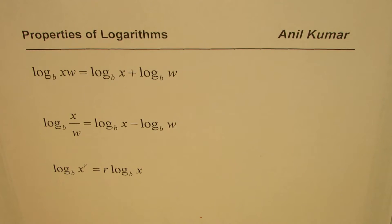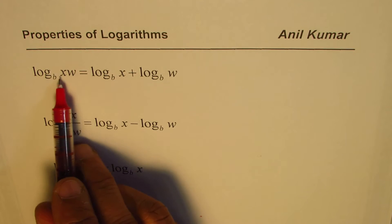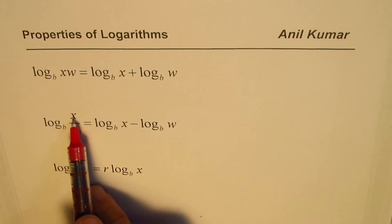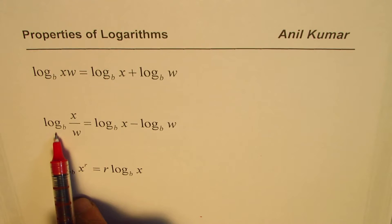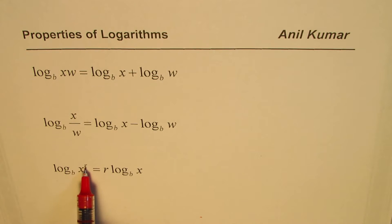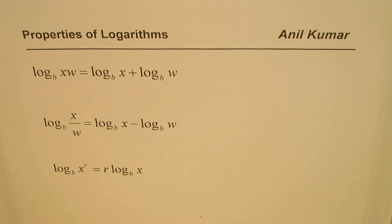I'm Anil Kumar. We have a few properties of logarithms to explore in this video. We are working with three basic properties of logarithms: log base B of X·W, that is a product, can be written as a sum of logarithms; the quotient of X and W with logarithm can be written as their difference; and if we have a power, log base B of X to the power of R, it can be written as R times log base B of X. These properties can also be easily proven.